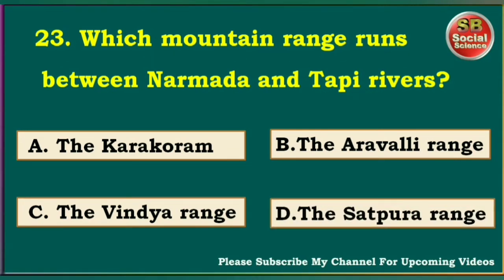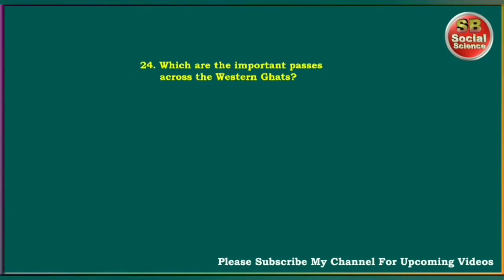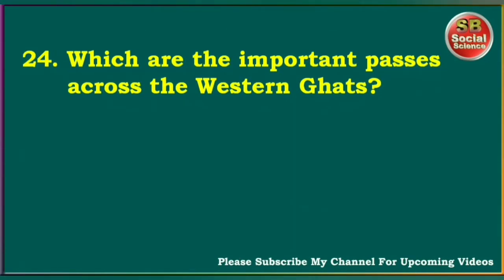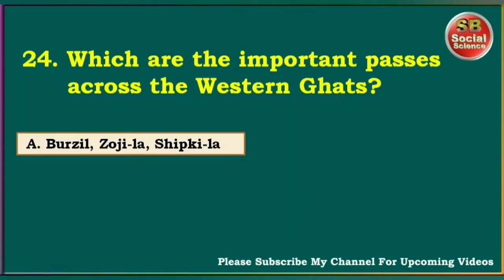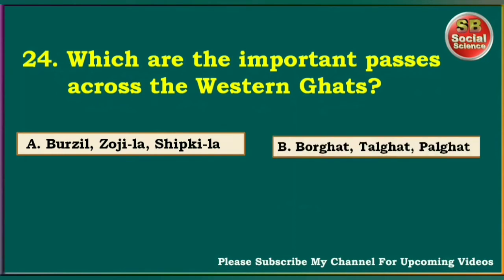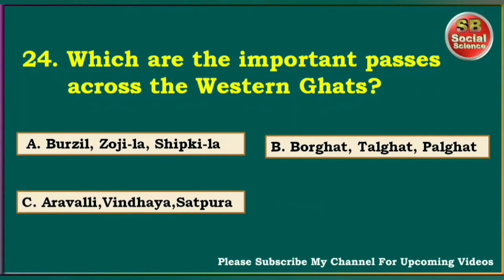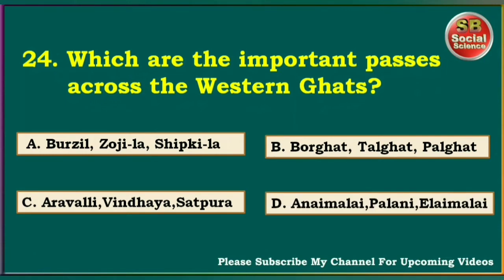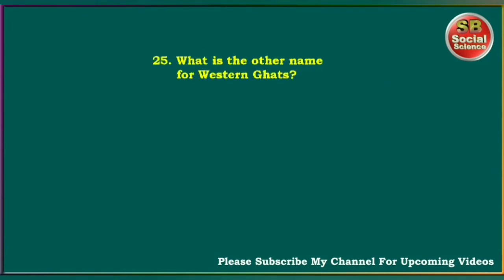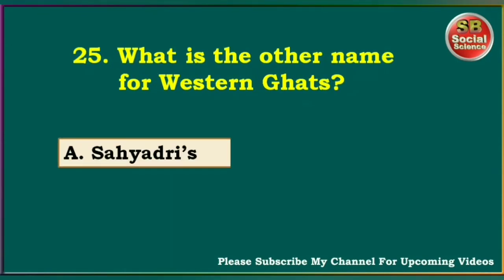Which are the important passes across the Western Ghats? Borghat, Thalghat, Palghat. The answer is Borghat, Thalghat, Palghat. What is the other name for the Western Ghats? Sayadris, dunes, lagoons, natural harbors. The answer is Sayadris.